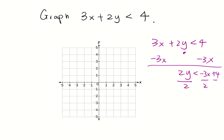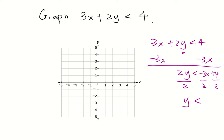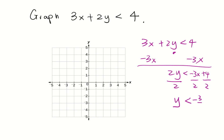So since we're dividing a positive number on both sides, you don't have to change the inequality sign. You have y is less than -3/2 x + 2. Right. So graph the line y = -3/2 x + 2.